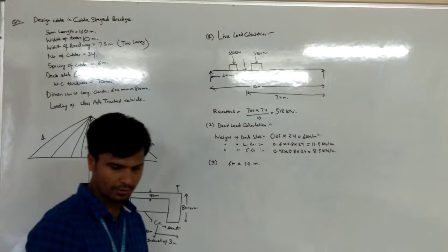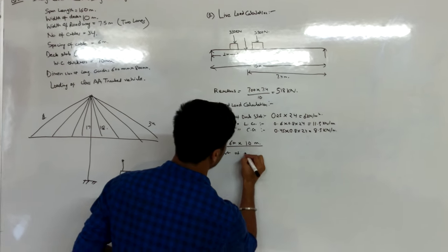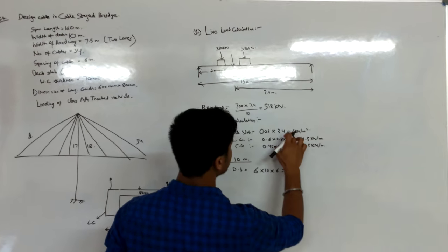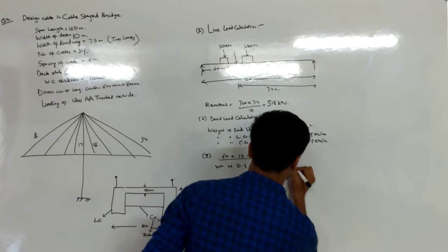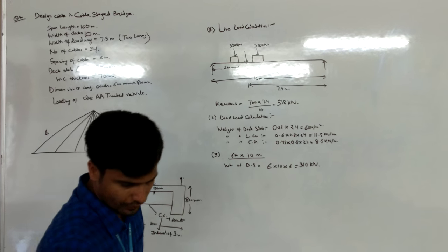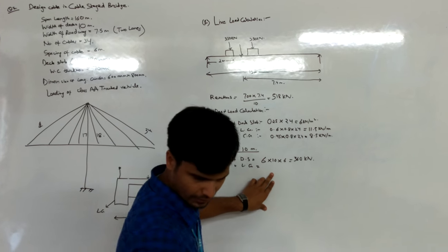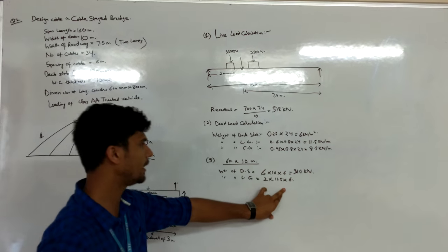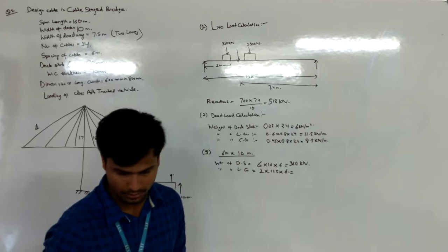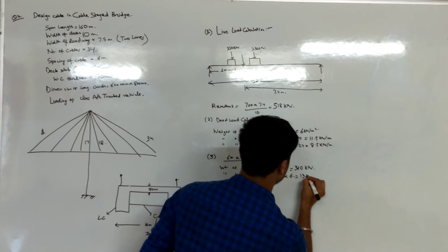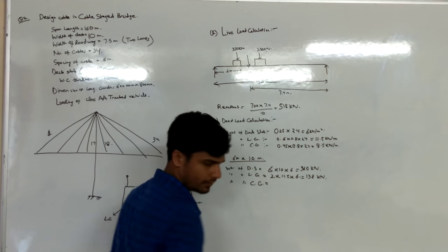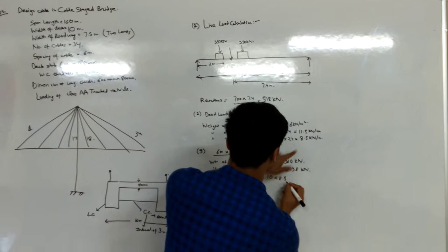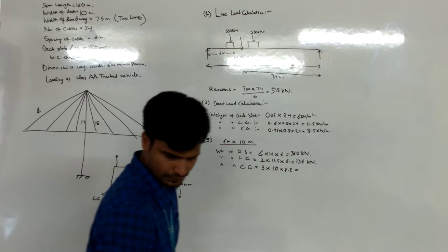We will do analysis on that part only — whatever cables are coming in that portion. Weight of deck slab equals 6 × 10 × 6 = 360 kN. Weight of longitudinal girder equals 2 × 11.5 × 6 = 128 kN (two longitudinal girders, over 6m distance). Weight of cross girder equals 3 × 10 × 8.5 = 250 kN.